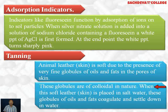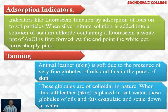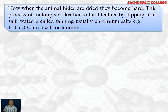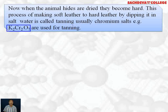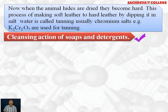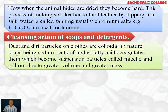Next is tanning. Animal leather skin is soft due to the presence of very fine globules of oil and fats in the pores of the skin. These globules are colloidal in nature. When this soft leather is placed in salt water, the globules of oil and fats coagulate and settle down in water. When the animal hides are dried they become hard. This process of making soft leather hard by dipping it in salt water is called tanning.